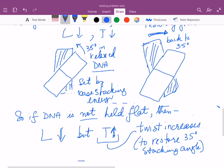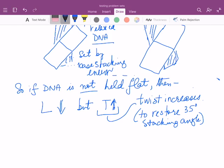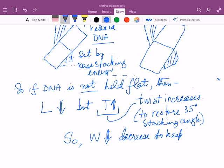As long as the DNA is free to flex, then it will essentially undergo a writhe, which compensates for the change in twist. And the writhe in this case will, so the writhe, W, will decrease to keep the linking number the same as it was before the twist increased.